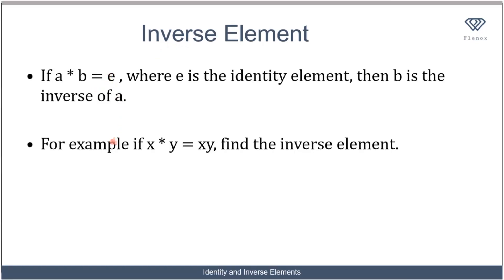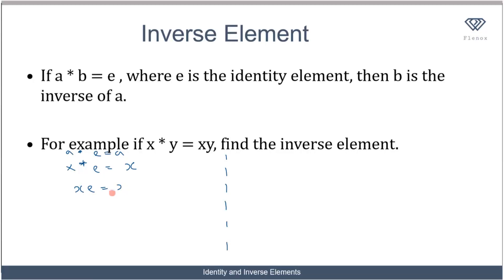For example, if x★y equals xy, find the inverse element. First we find the identity element. We replace y with e and set it equal to x: x★e equals x. As defined by the formula, x★e equals xe, so xe equals x. Dividing both sides by x, I have e equals 1. So the identity element is 1.